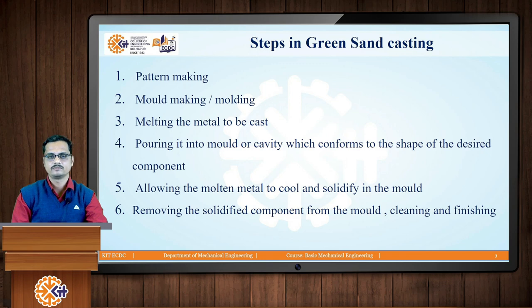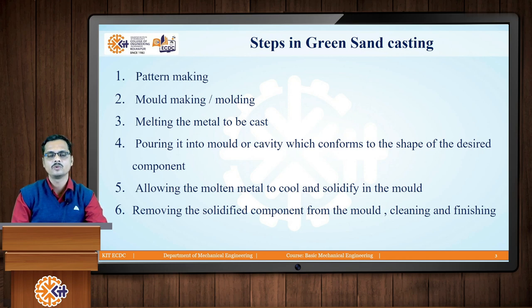After creating the mold cavity, in step number 3 we melt the metal to be cast. For example, if we want to produce a casting of cast iron, we melt the cast iron using furnaces. In foundries we use induction furnaces to produce the molten metal of the material to be cast. In step number 4, we pour this molten metal into the mold cavity which conforms to the size and shape of the casting to be produced.